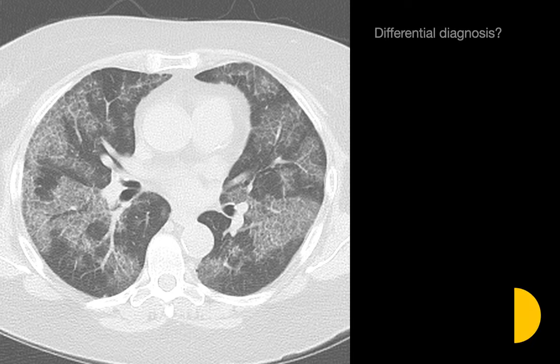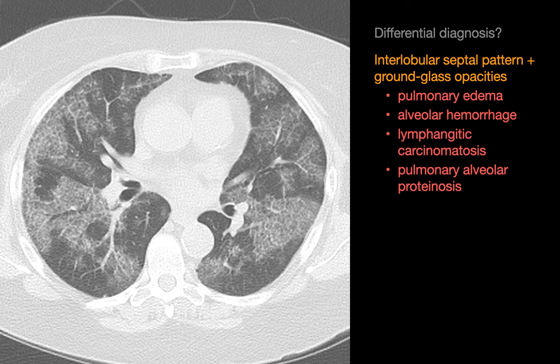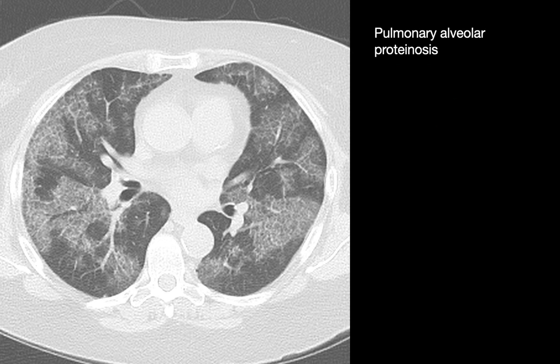What's your differential diagnosis for this case? The imaging features are very similar to the first case: an extensive, multifocal, bilateral, heterogeneous lung opacity pattern with both an interlobular septal pattern and ground glass opacities. In the first case, the septal pattern predominated, while here the two patterns exist in relatively equal amounts. As ground glass opacities can occur in any disorder in our differential for interlobular septal pattern, our differential is derived from those causes. This case is also an example of pulmonary alveolar proteinosis.